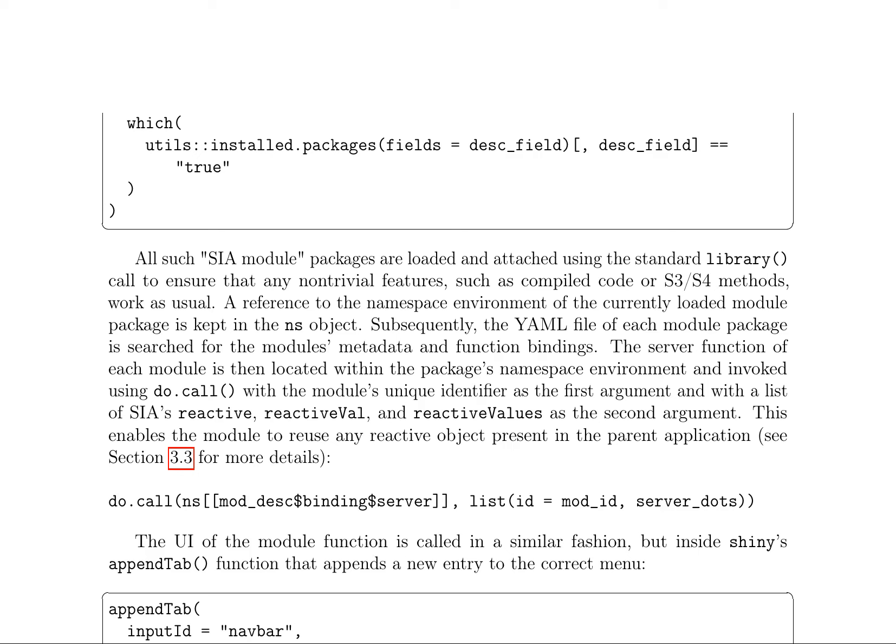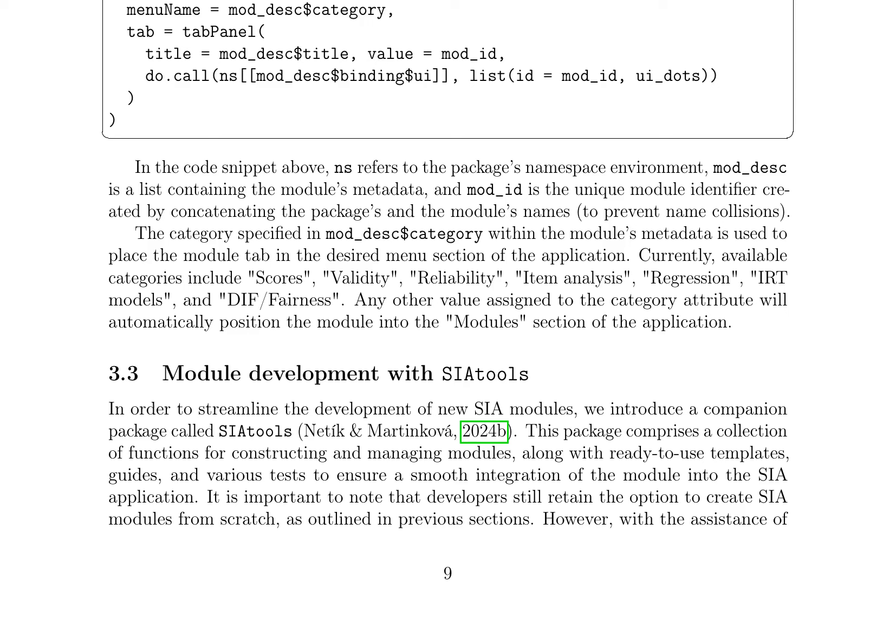The SIA module packages are loaded and attached using the standard library call, ensuring that any non-trivial features, such as compiled code or S3/S4 methods, work as usual. A reference to the namespace environment of the currently loaded module package is kept in the NS object. The YAML file of each module package is then searched for the module's metadata and function bindings. The server function of each module is located within the package's namespace environment and invoked using do.call, with the module's unique identifier as the first argument and a list of reactive, reactiveVal, and reactiveValues as the second argument.